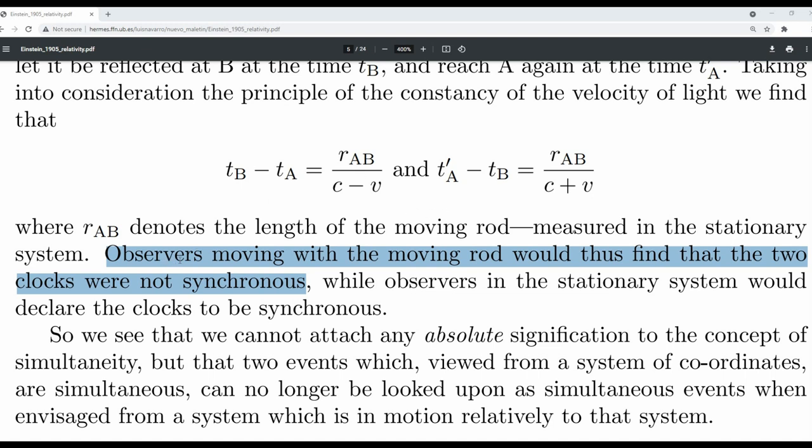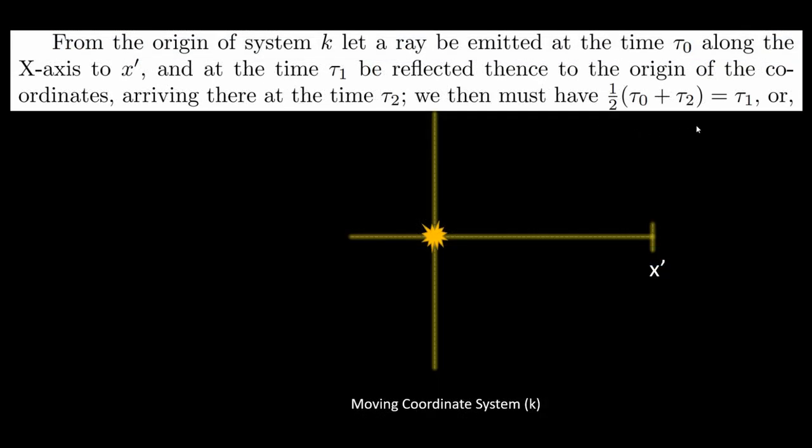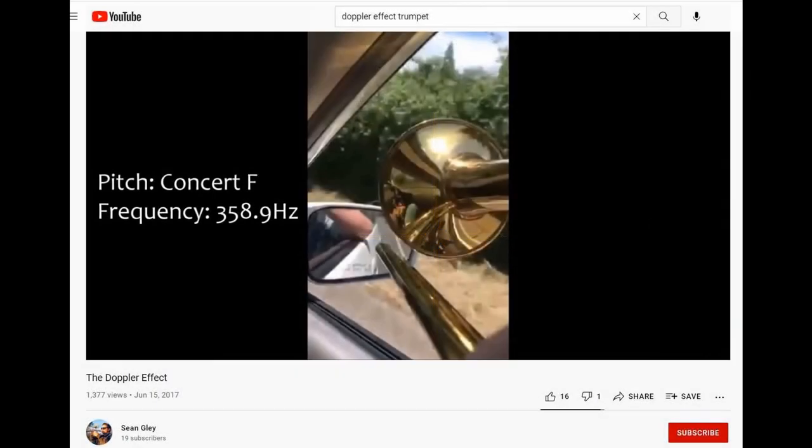equation, where he says observers moving with the moving rod would thus find that the two clocks don't synchronize. So this is different than this. And now, magically, it's working. The forward time equals the back time when moving. But you already know why it's working.